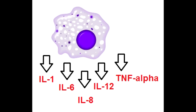What is interleukin-1? Interleukin-1 is an endogenous pyrogen that causes fever and mediates acute inflammation. It also activates endothelium to express adhesion molecules, and induces chemokine secretion to recruit leukocytes.